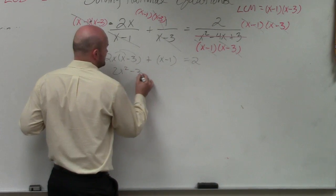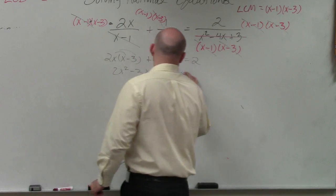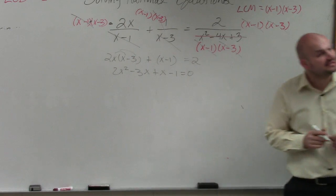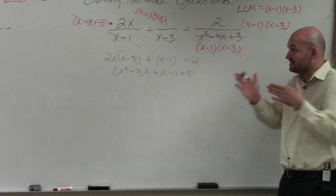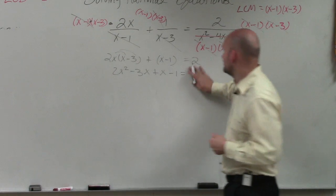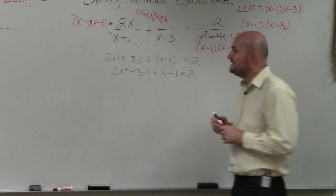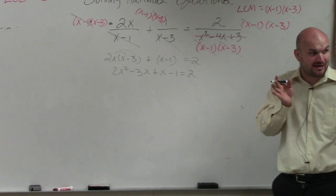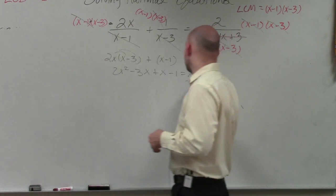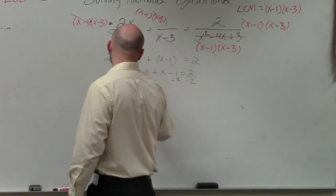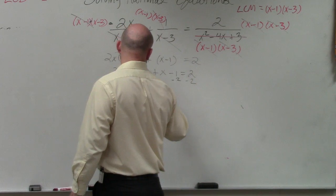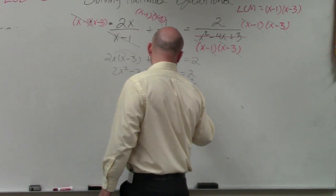2x squared minus 6x plus x minus 1 equals 2. I notice that this is a quadratic, right? So for us to get a quadratic, I've got to get everything to, no, wait, it's equal to 2, right? I have to get everything to the same side. So I'm going to subtract the 2 on both sides, and then I'm going to combine my like terms, which I get 2x squared minus 2x minus 3 equals 0.